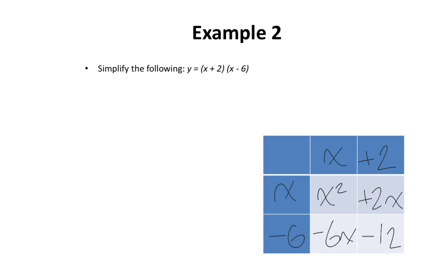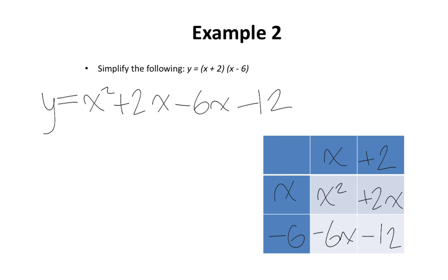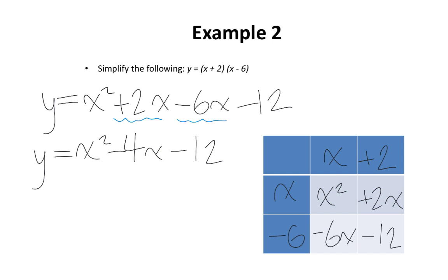And negative 3 multiplied by positive 2 is negative 6, because when you have a negative multiplied by a positive, your answer is negative. I'm going to rewrite these terms: y equals x squared plus 2x minus 3x minus 6. Positive 2x and negative 3x are like terms, so collecting them gives negative 1x. The negative 6 stays the same. So the final answer is y equals x squared minus x minus 6.